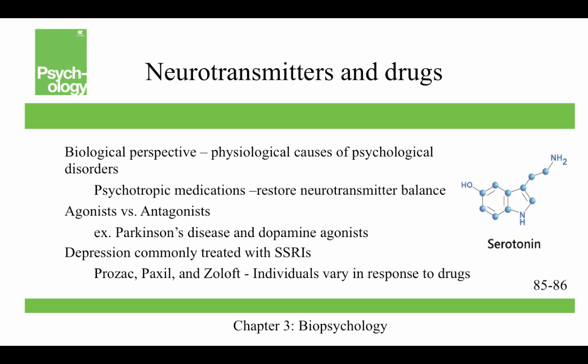Regarding neurotransmitters and drugs, the biological perspective holds that there are physiological causes of psychological disorders. We can try to treat the symptoms through psychotropic medications, which are used to restore neurotransmitter balance. We can have agonists versus antagonists: an agonist mimics a neurotransmitter at the receptor site and strengthens its effect, while an antagonist blocks or impedes normal neurotransmitter activity. For example, Parkinson's disease is associated with low levels of dopamine, so dopamine agonists are one treatment strategy.